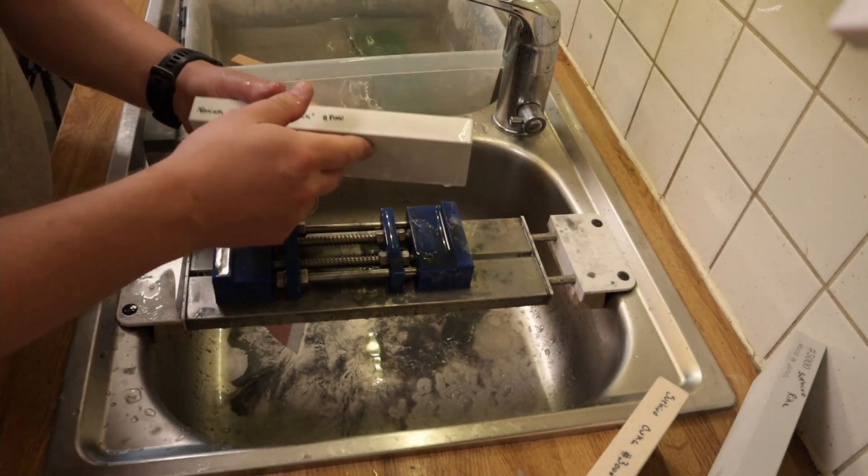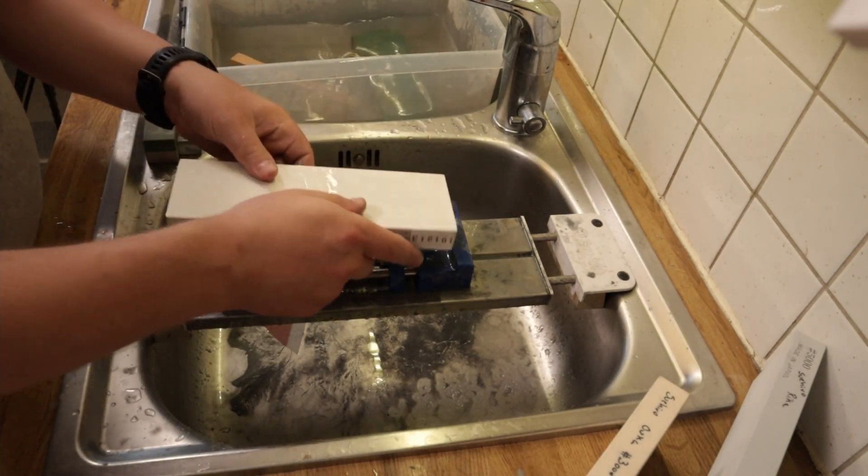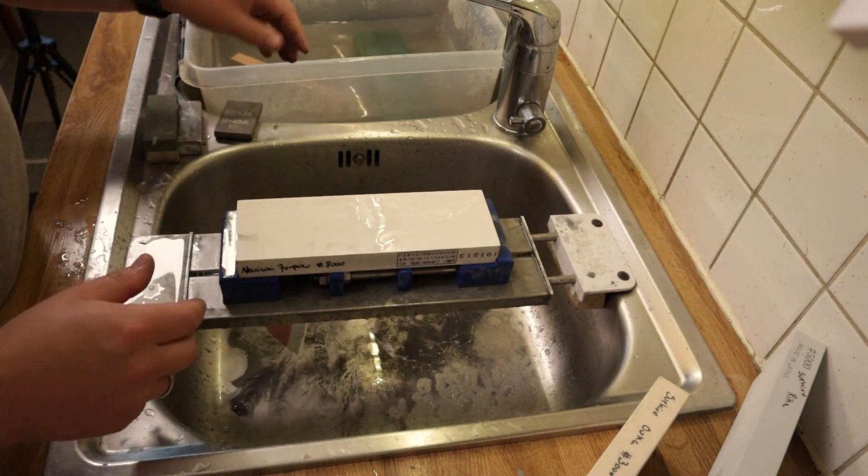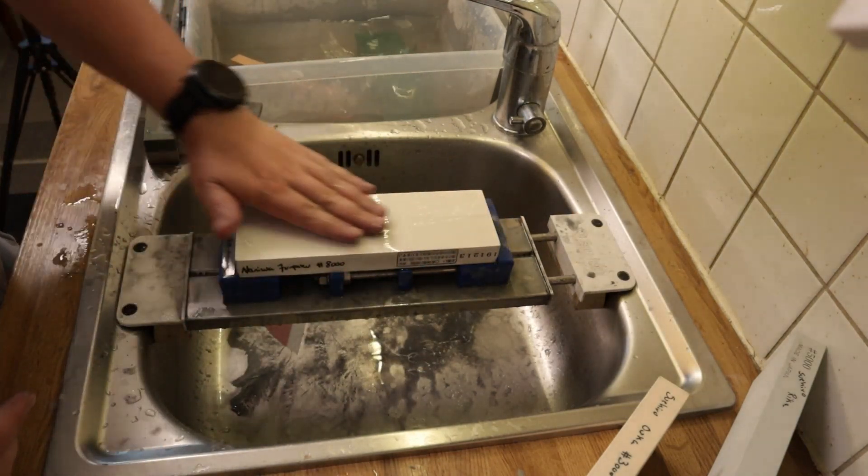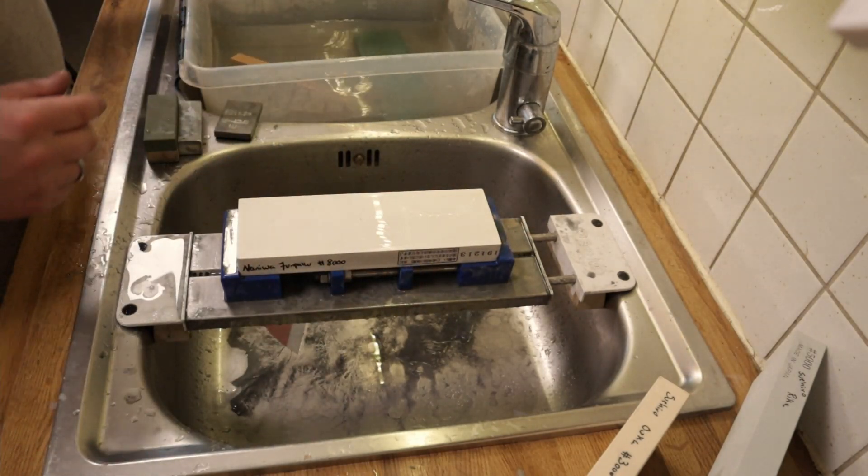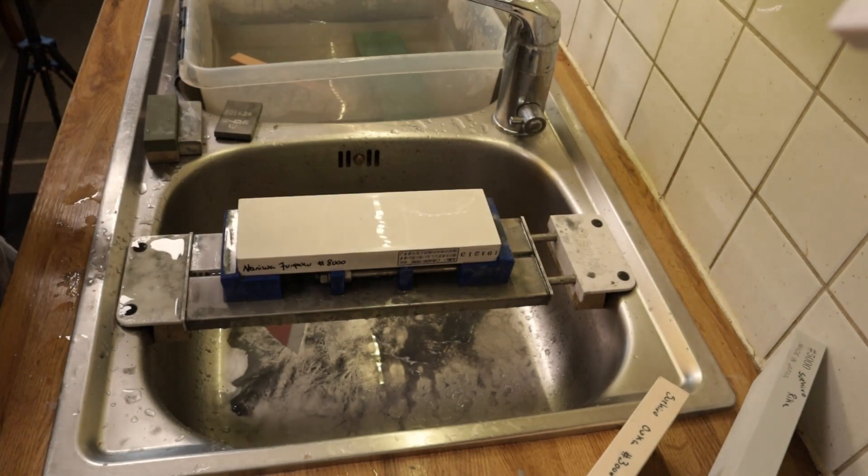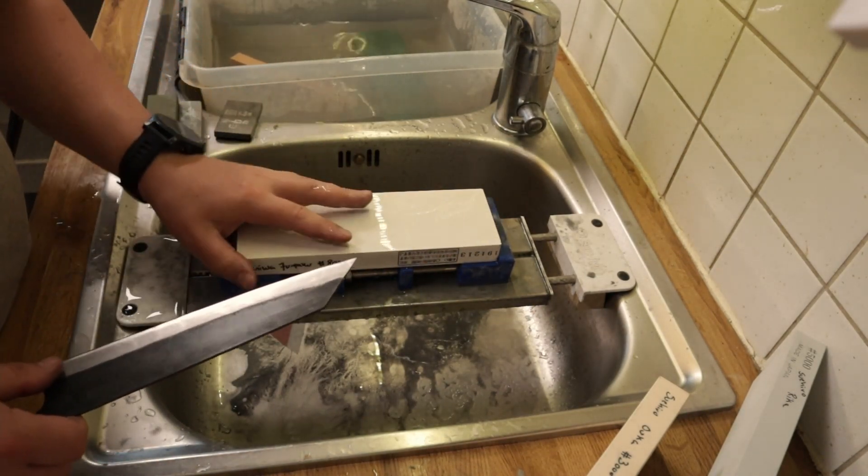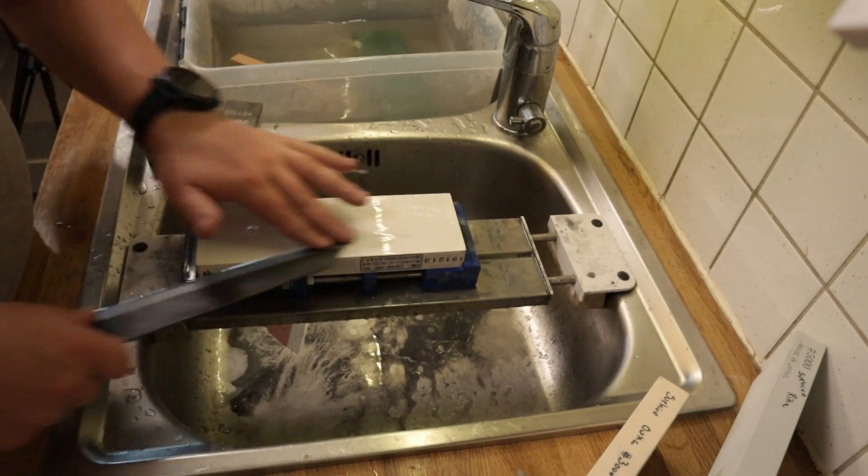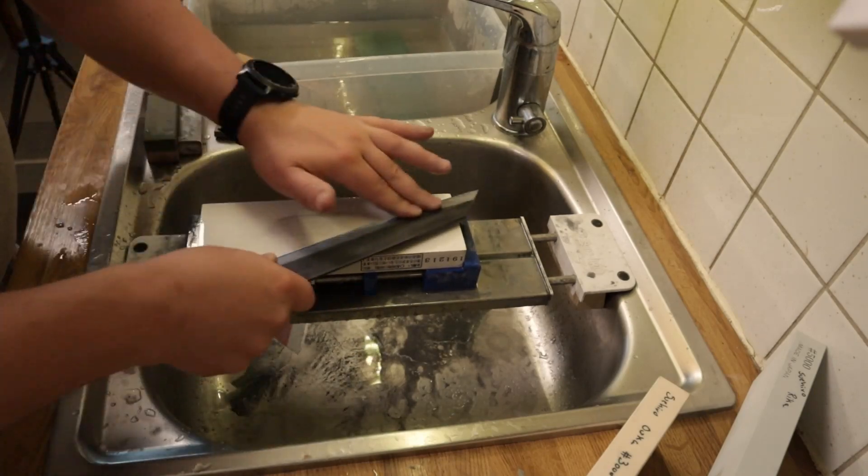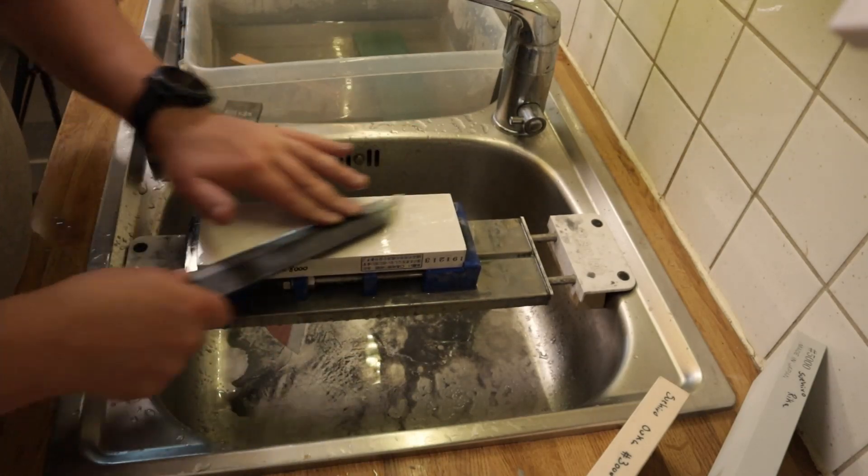So the next one is the Naniwa Junpokyu, the Snow White. This is a fun stone to work on. It's pretty fast for an 8000 stone, but it gives a very nice finish as well. Oh yeah, and the feedback, it's great, I forgot that.